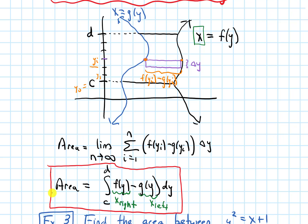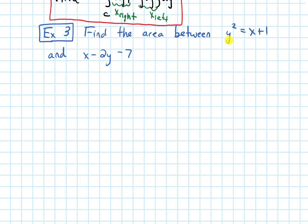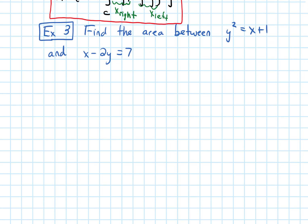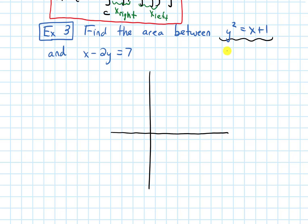So I'm boxing that formula, and now let's look at an example. Let's find the area between y squared equals x plus 1 and x minus 2y equals 7. So I want to draw a picture. For y squared equals x plus 1, I'm going to isolate x to get x equals y squared minus 1. If this instead had been y equals x squared minus 1, it would have been an upward-facing parabola. Because the x's and the y's are switched, this is now going to be a sideways parabola.